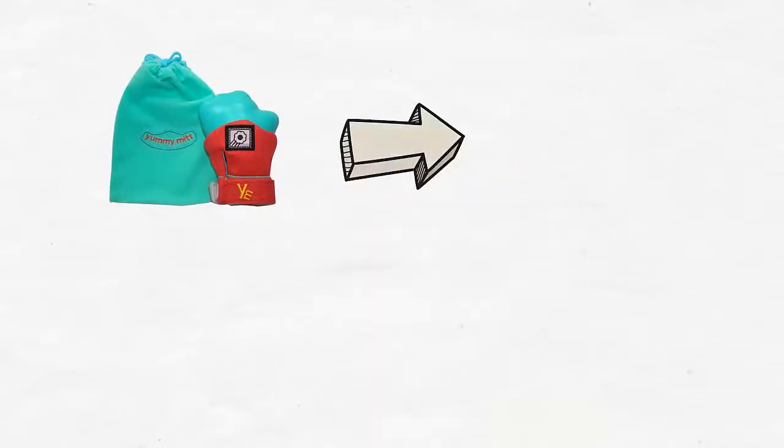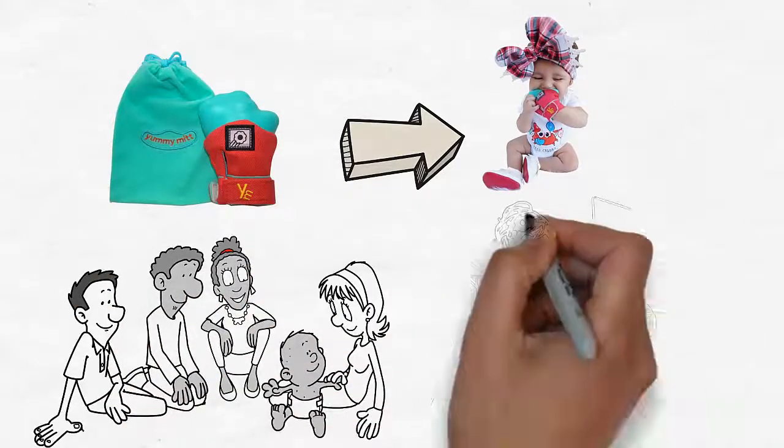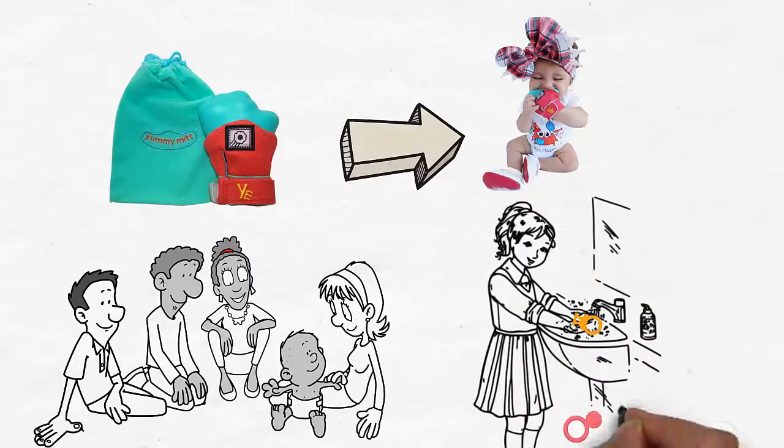The mitten fits securely over baby's hand and allows for an infant to self-soothe, providing immediate teething relief and eliminating the hassle of finding and cleaning dropped teethers.